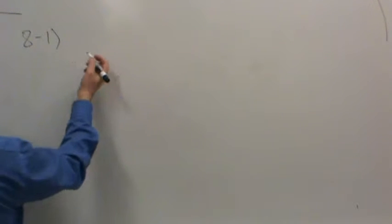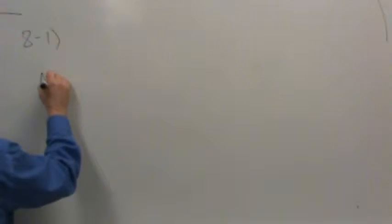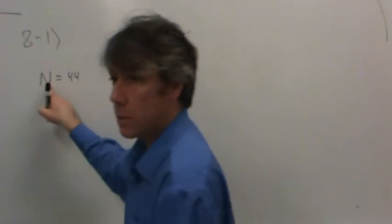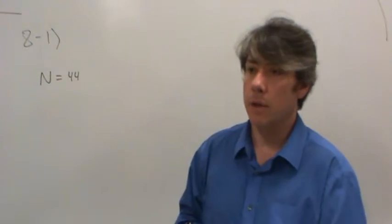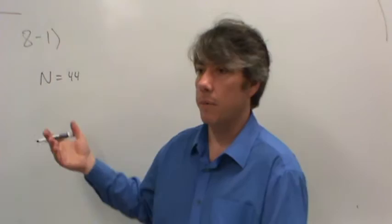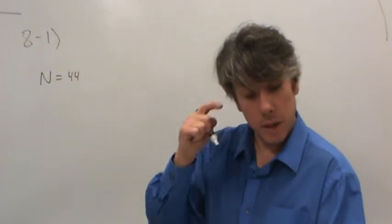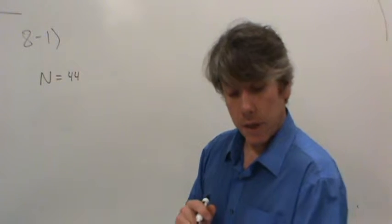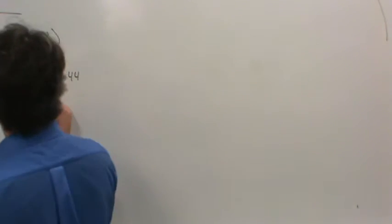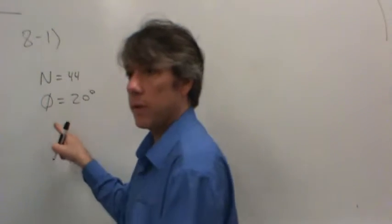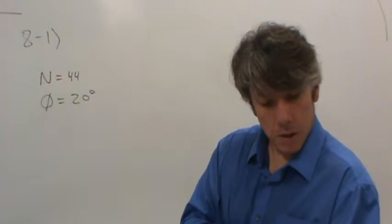The tooth, the gear, has 44 teeth. We will always use a capital N for the number of teeth. Now a lot of times we'll use a subscript P or G for pinion or gear. But since we're only talking about one gear, I don't know if it's the pinion or the gear, so I'm just going to leave it as a capital N.